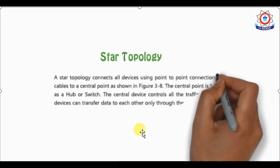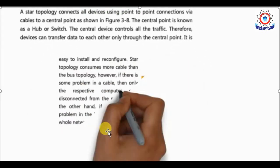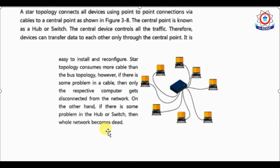Star topology connects all devices using point-to-point connections via cable to a central point, which we call a hub or switch. The central device controls all the traffic, so devices can transfer data to each other only through the central point. It is easy to install and re-configure — this is an advantage.